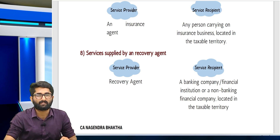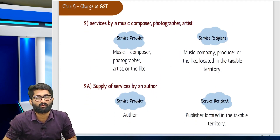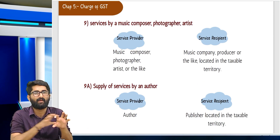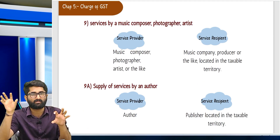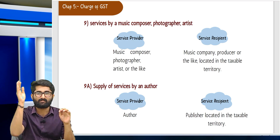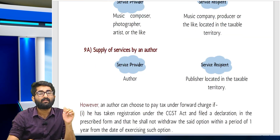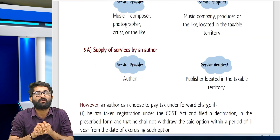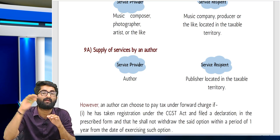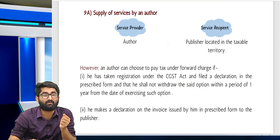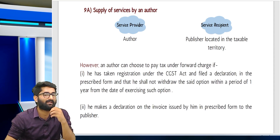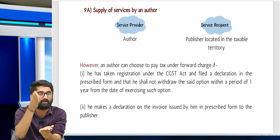Entry 9: Services by a music composer, photographer, or artist — they are the service provider giving services to a music company, producer, or any person located in the taxable territory; the music company or producer will pay under RCM. Entry 9A: Supply of service by an author to a publisher located in the taxable territory — publisher will pay under RCM. The author has the option to opt for FCM; if he opts for FCM he must make a declaration, and from the date of opting he cannot opt out for the next one year.